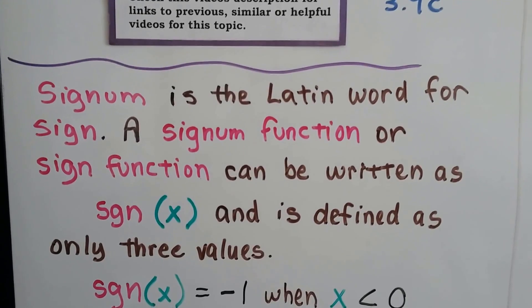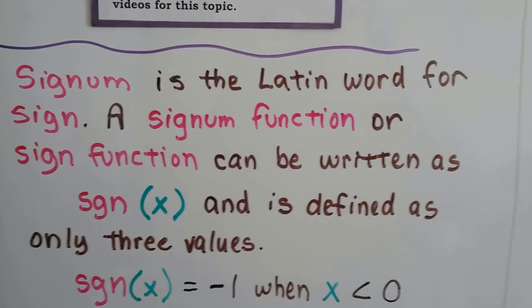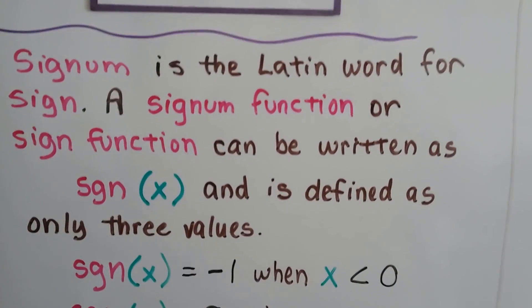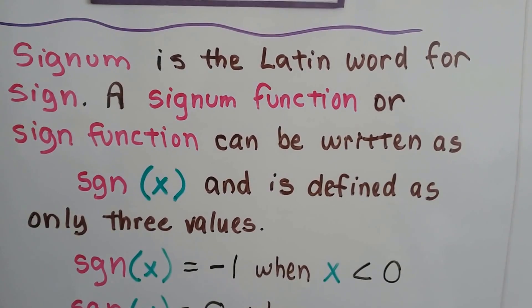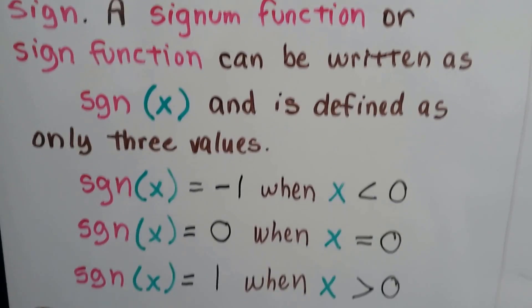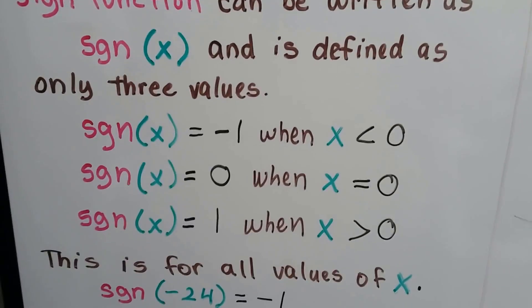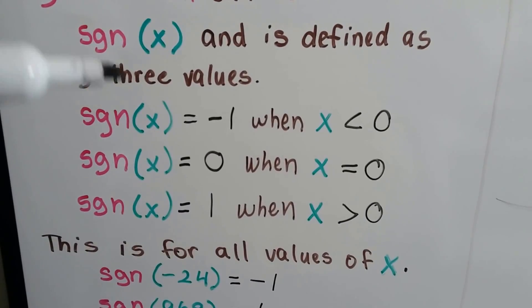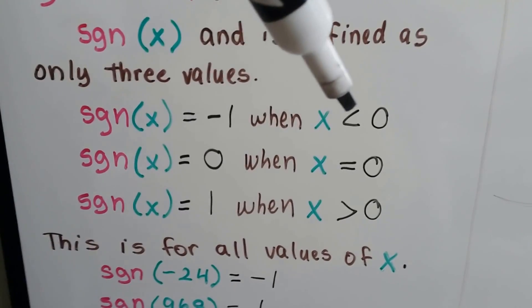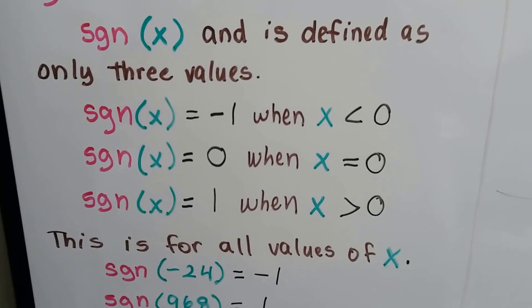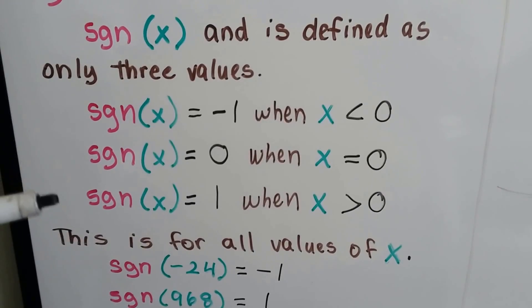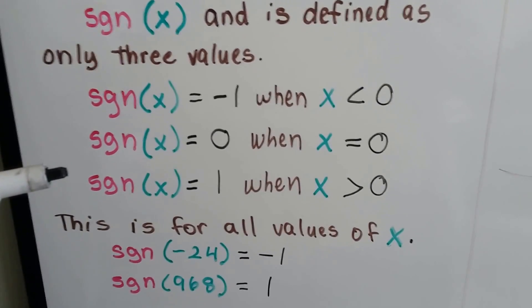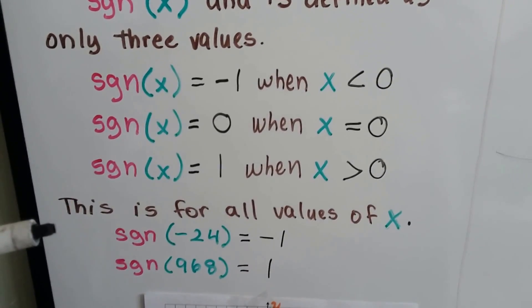Signum is the Latin word for 'sign,' and a signum function, or sign function — it's the same thing — can be written as sgn(x), and we would say 'sign function of x.' It's defined as only three values, so you get a choice of one of three. The sign function of x equals negative one when x is less than zero, zero when x equals zero, and one when x is greater than zero. This is for all values of x.